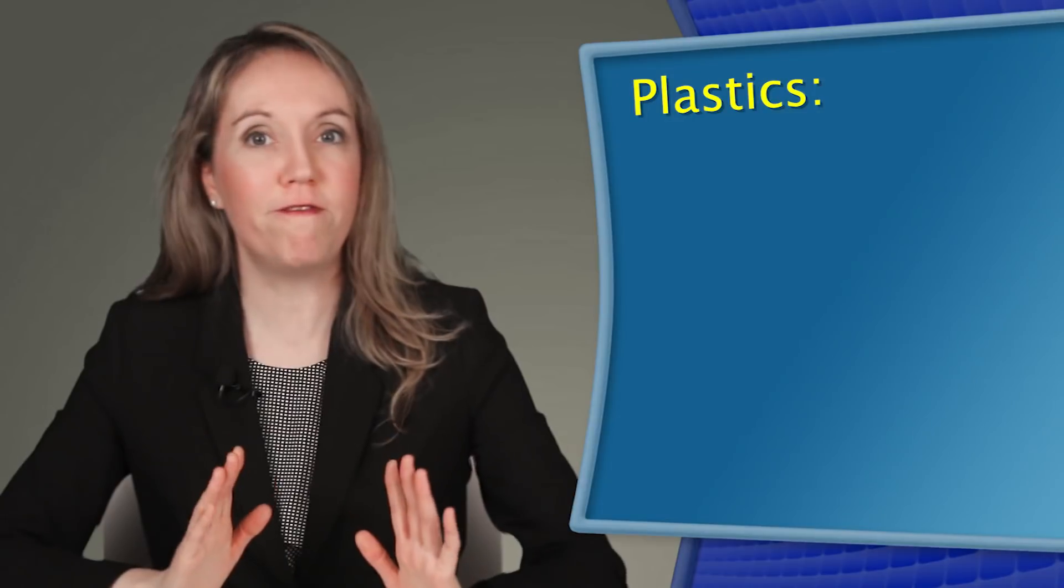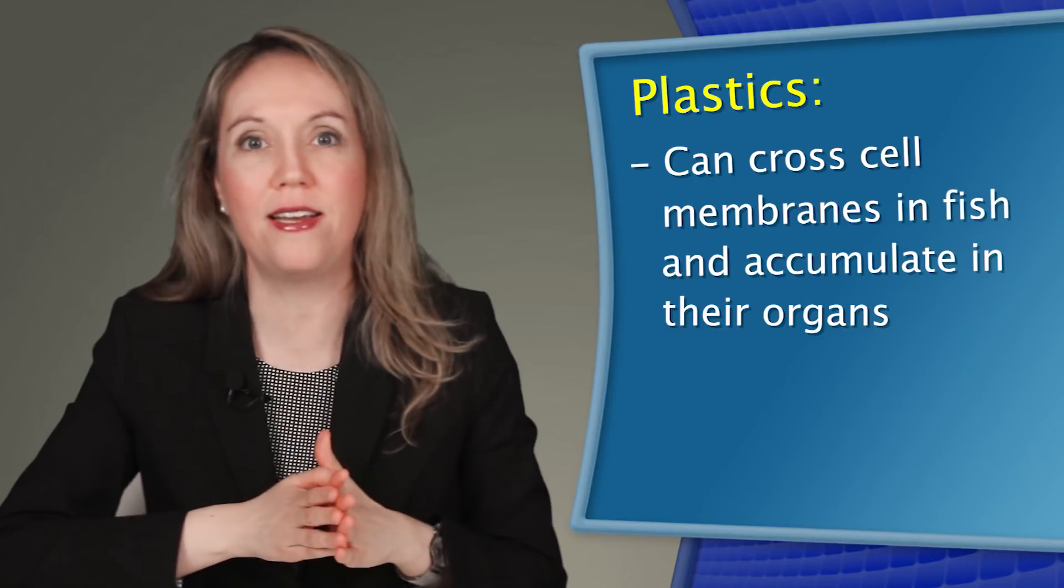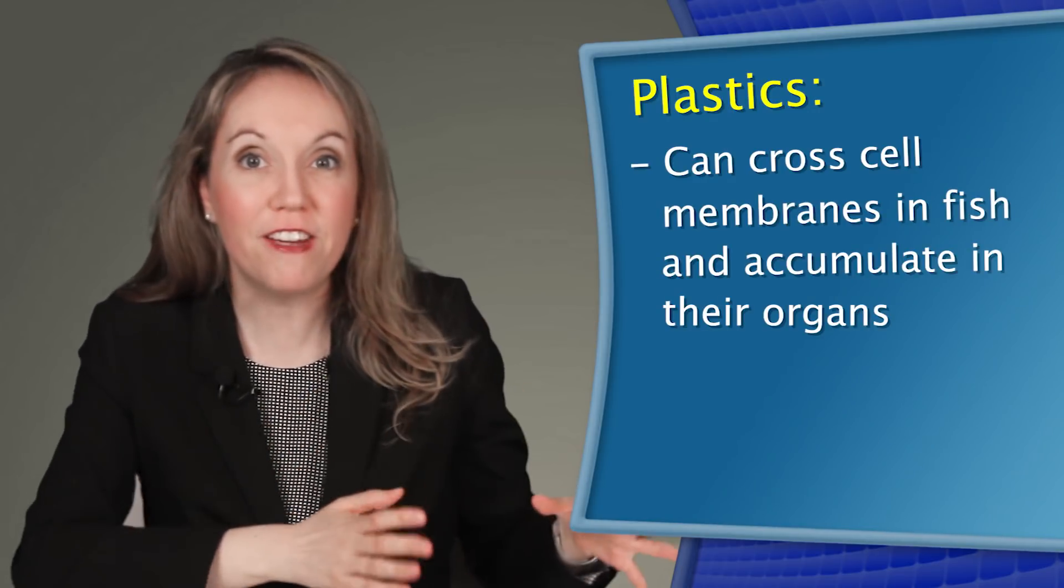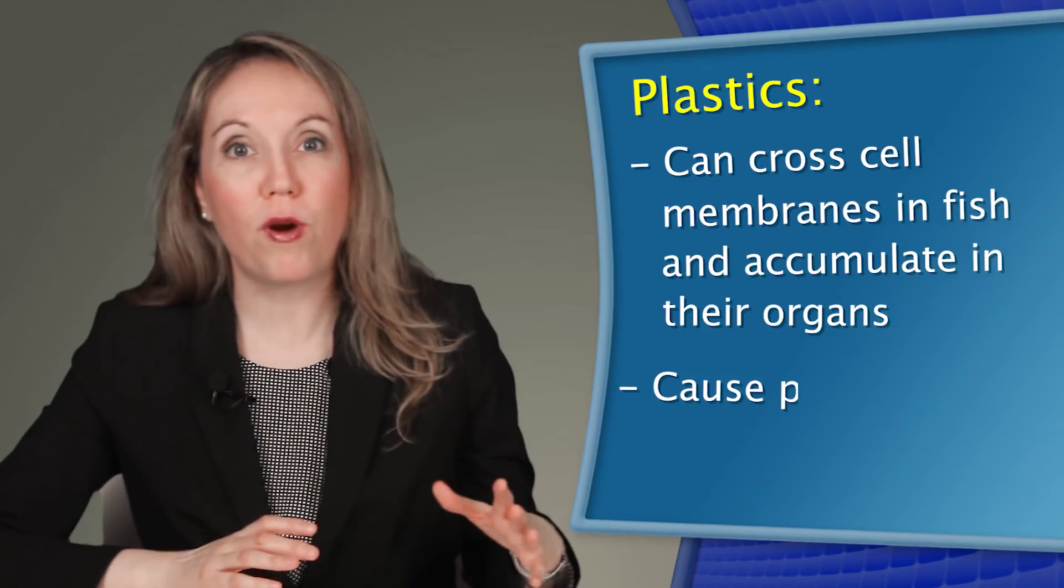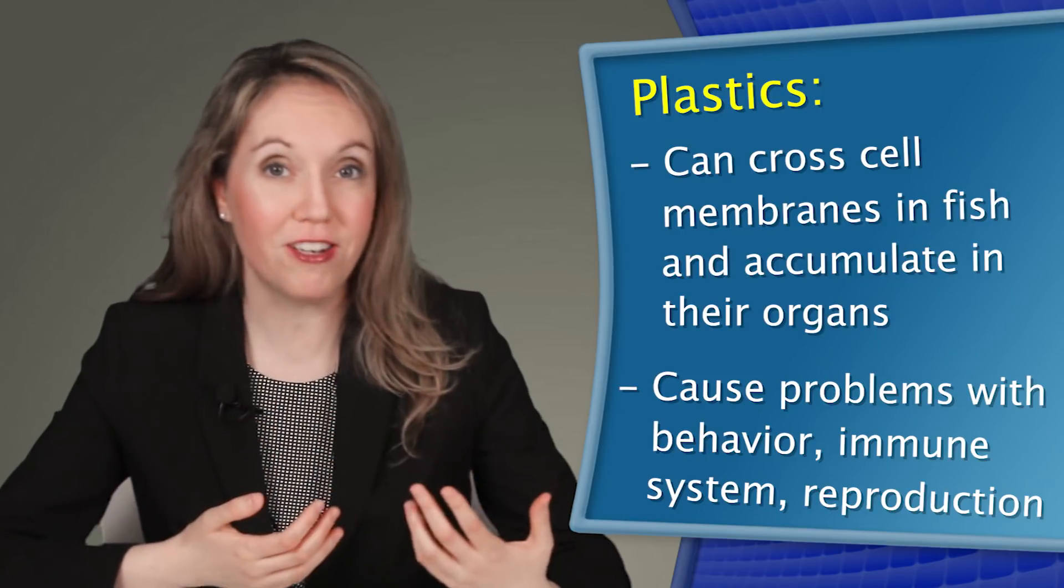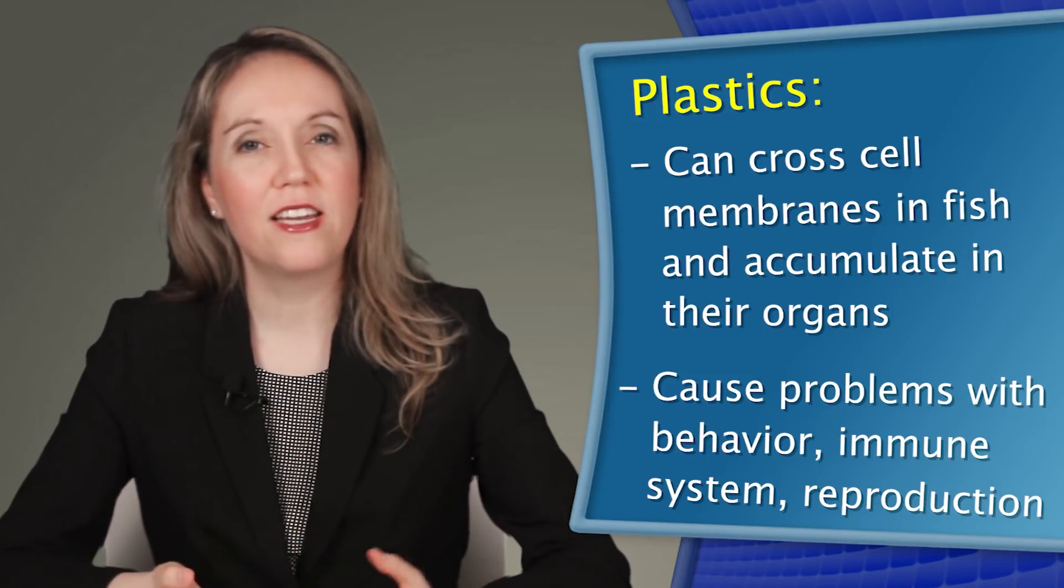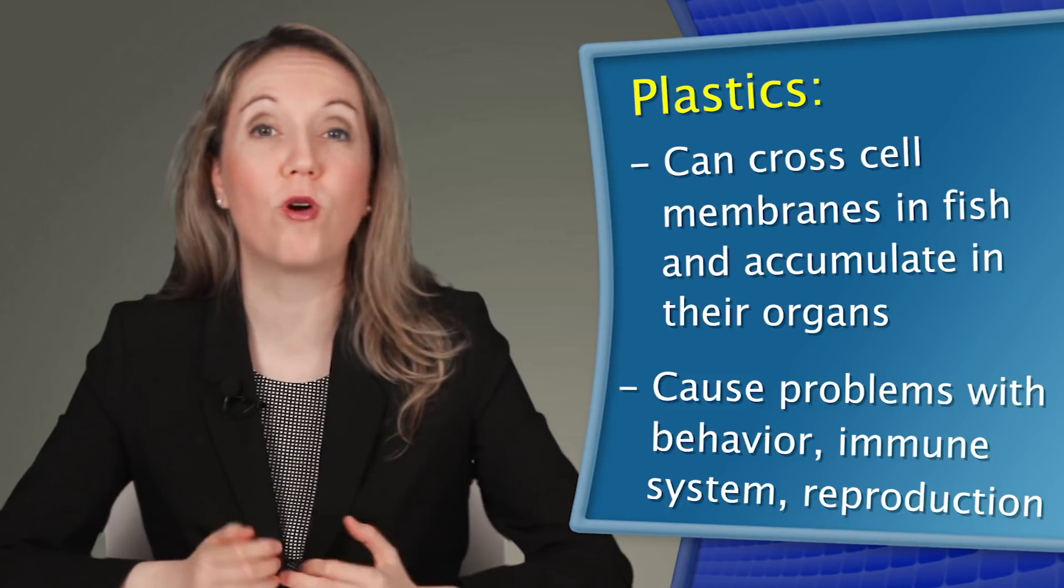In some fish, however, we've seen plastic can cross cell membranes and accumulate in the fish's livers, brains, and testicles, and cause problems with their behavior, immune system, and reproduction. And if it's affecting fish, I don't know how we can be so comfortable that it's not also going to affect us.